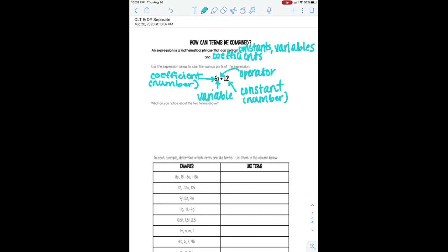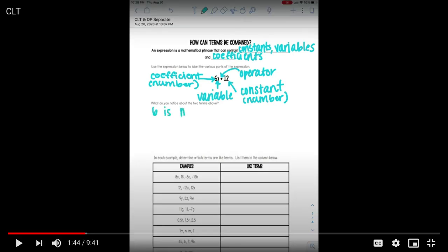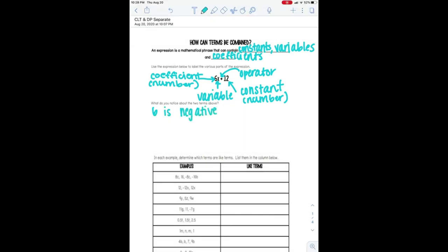So when you're thinking about what do you notice about the two terms above, I want you to take a minute and kind of think about that to yourself. So take a minute and pause the video and think about what do you notice. So now that you've paused, you might have noticed that 6 is negative. That 6 and 12 are both multiples of 6. And you might have noticed that there's no equal sign. So that's the big difference, okay?